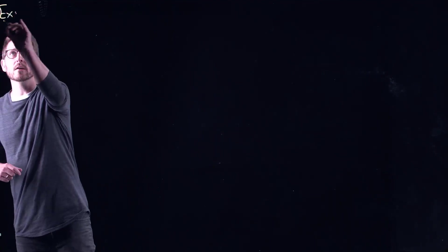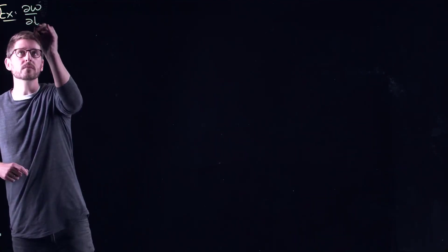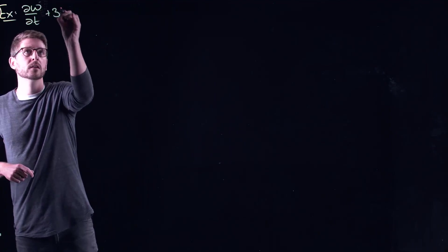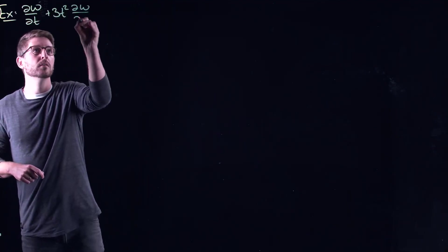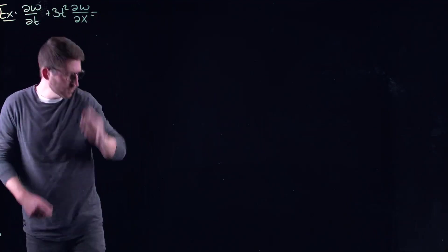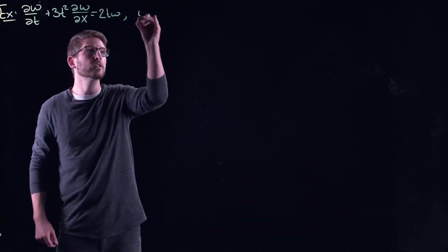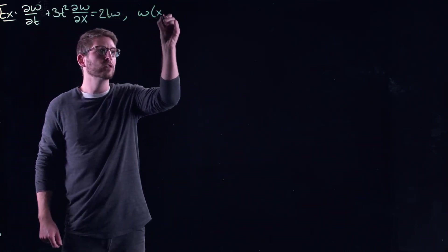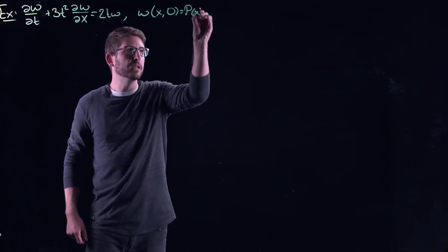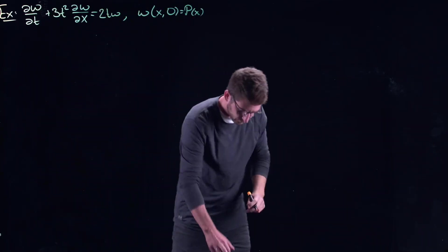Let's take a look at another example. And I'm going to step up the complexity here. Let's look at this case: partial w/partial t plus 2tw times partial w/partial x equals zero. And of course, let's just define an initial profile to be p of x.